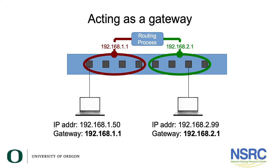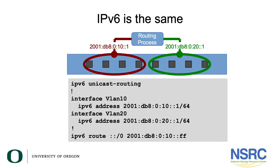IPv6 works the same way. We assign an IPv6 address to VLAN 10 and to VLAN 20 on the Layer 3 switch, and set the IPv6 default gateway accordingly. Any device connecting to this switch using an IPv6 address will use the VLAN 10 or VLAN 20 default gateway addresses depending on which VLAN they connect to.